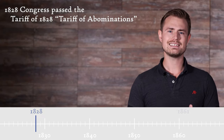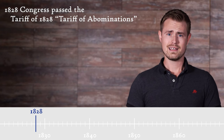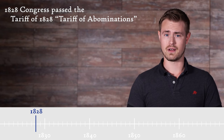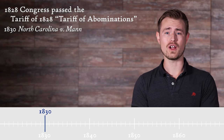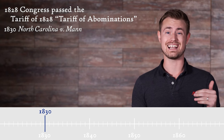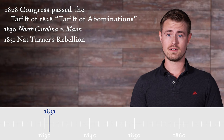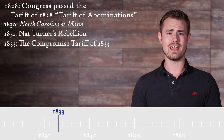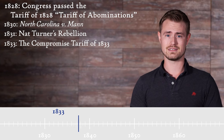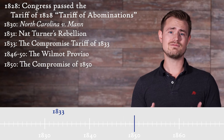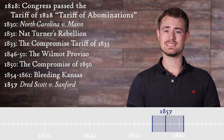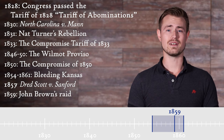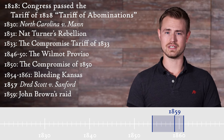1828: Congress passed the Tariff of 1828, also called the Tariff of Abominations by its opponents in the Cotton South. 1830: In North Carolina v. Mann, the Supreme Court of North Carolina ruled that slave owners had absolute authority over their slaves. 1831: Nat Turner's Rebellion. 1833: the Compromise Tariff of 1833. 1846–1850: the Wilmot Proviso. 1850: the Compromise of 1850. 1854–1861: Bleeding Kansas. 1857: Dred Scott v. Sanford. 1859: John Brown's Raid. Those are just some of the political issues going on.